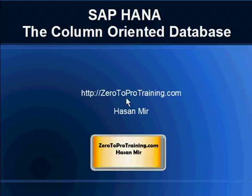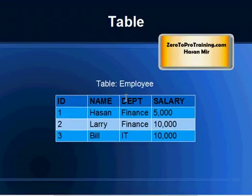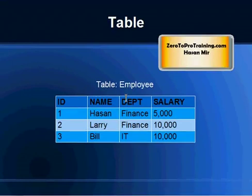Hello, the topic for today's session is SAP HANA, the column-oriented database. This is Hassan Mir from 02Protraining.com. On the screen you're seeing a typical table, a very simplified employee table containing data for employees. Each record is representing an instance of an employee, so we have three employees: Hassan, Larry, and Bill. We are storing four attributes: ID, name, department, and salary.